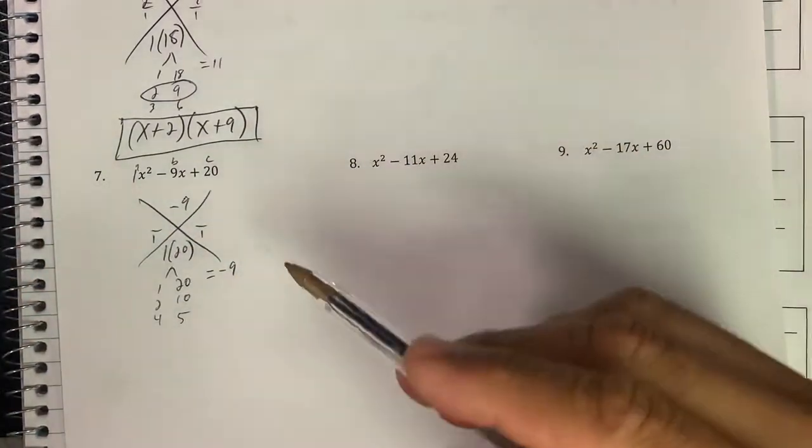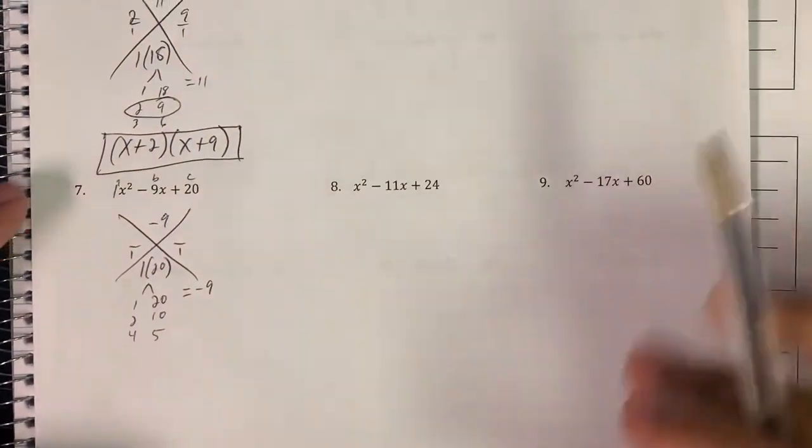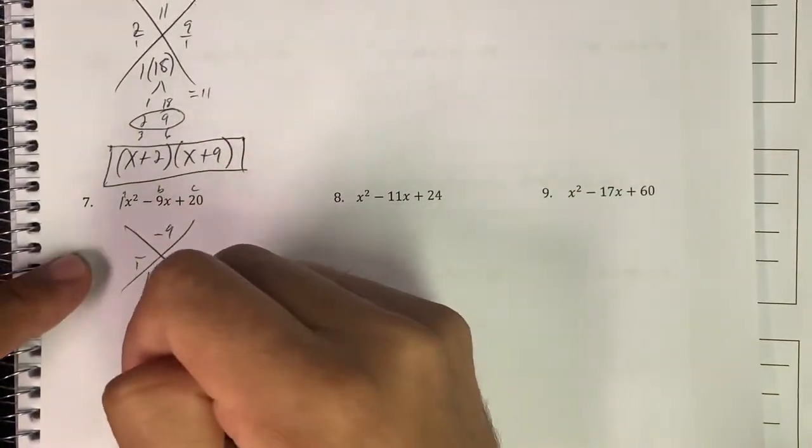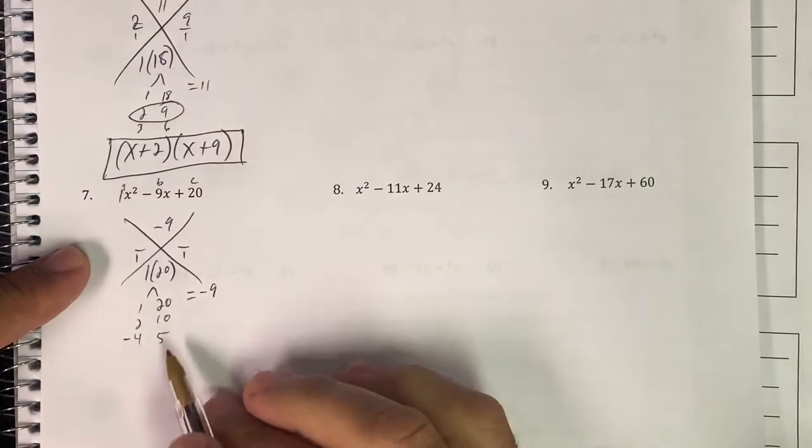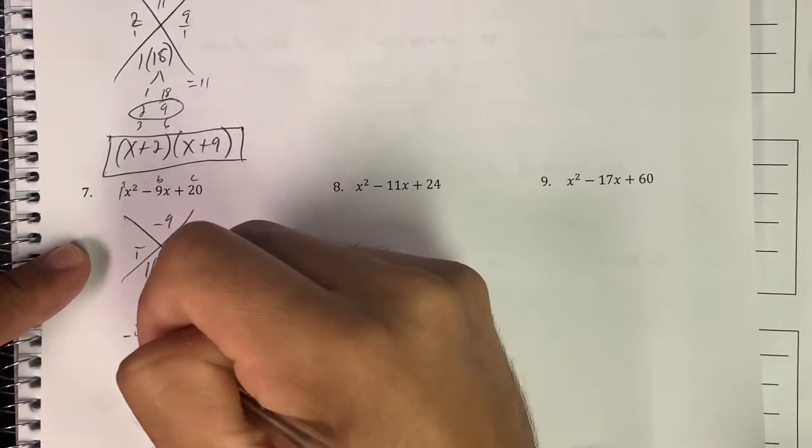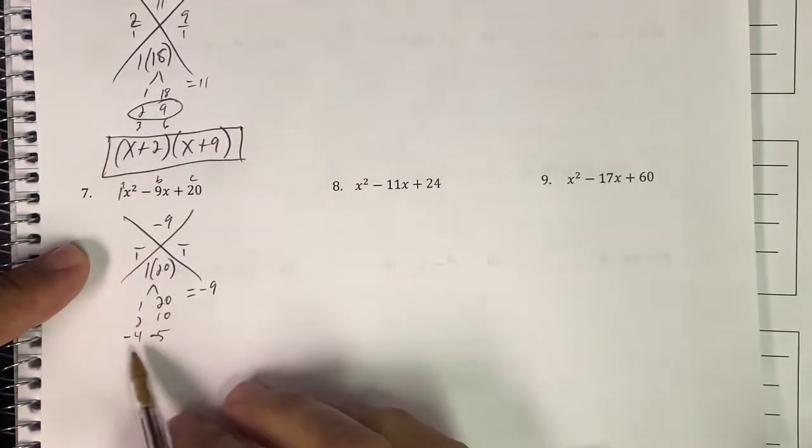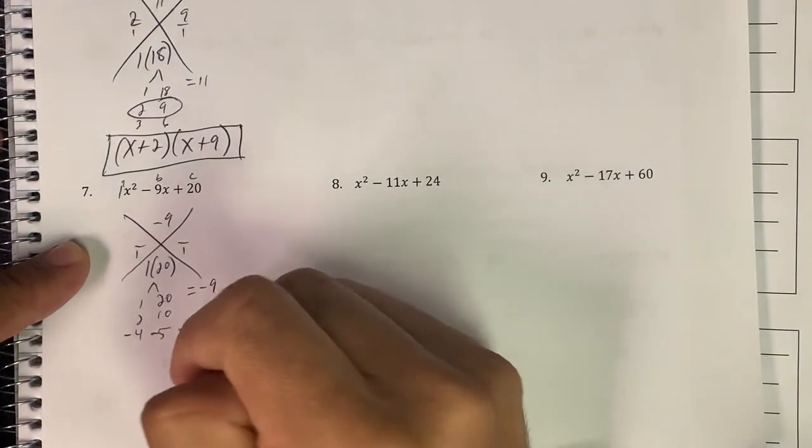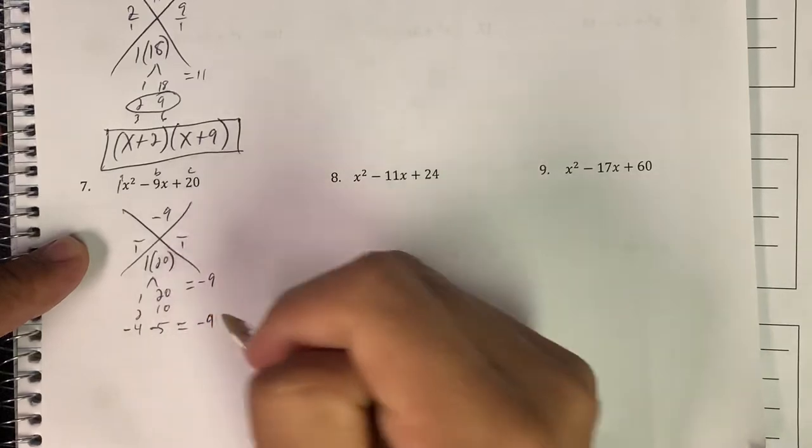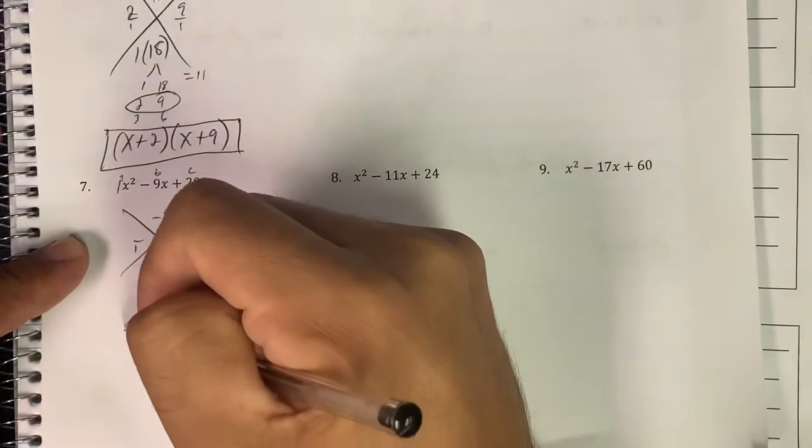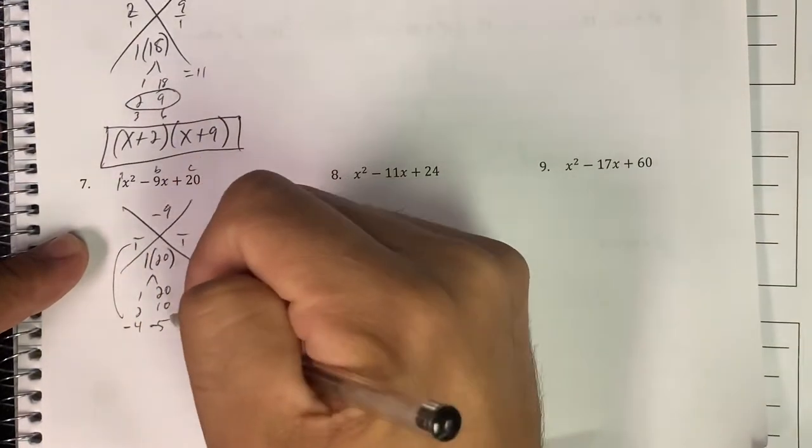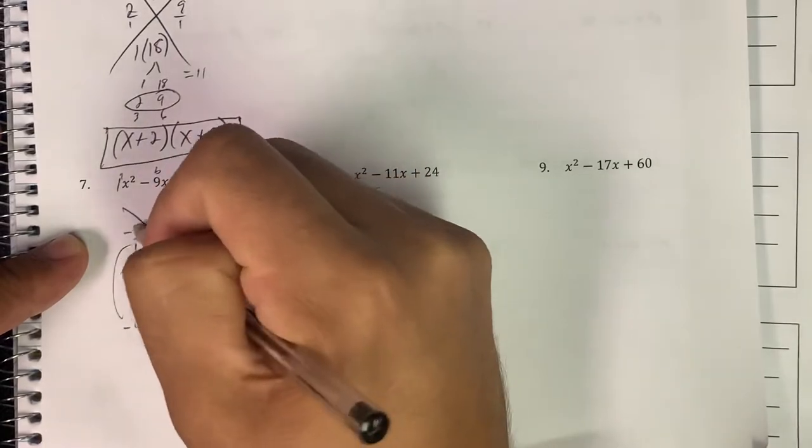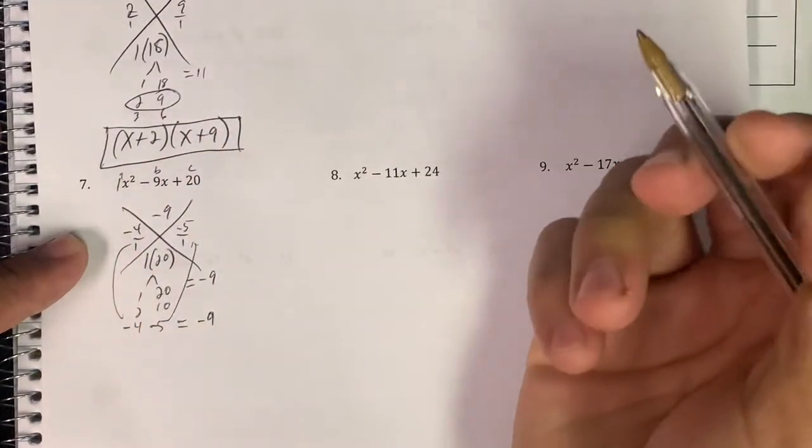However, like I said earlier, you can have negative parts in here. So if I have a negative 4 and I want to multiply it to get a positive 20, I need a negative 5 as well. Negative times negative is positive, 4 times 5 is 20, so that one equals negative 9. So this goes up here, this goes up here. We got negative 4, negative 5, no big deal.